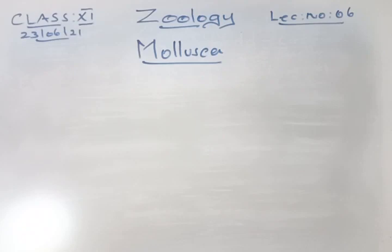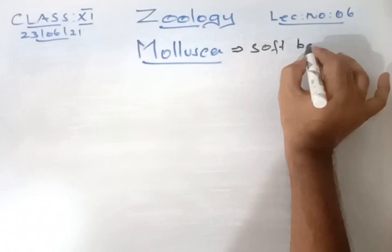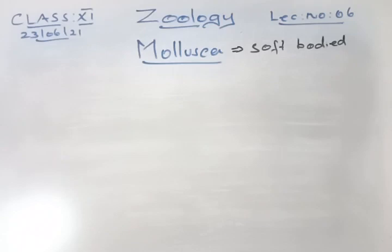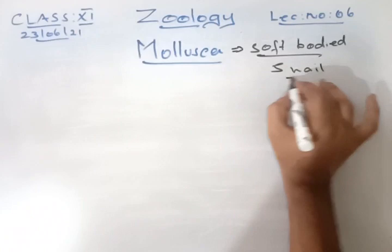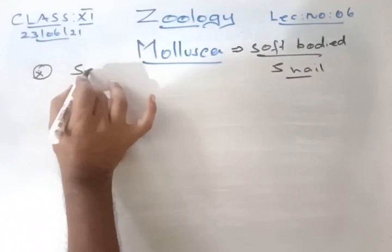The next phylum is Mollusca. Mollusca are called soft-bodied animals. Arthropoda is the largest phylum and Mollusca is the second largest phylum in the animal kingdom. An example is a snail.